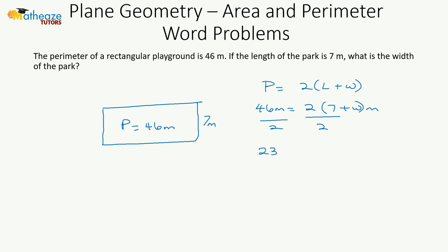To find the value of the width, 23 minus 7 is equal to w, so the width is 16 meters.